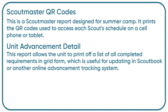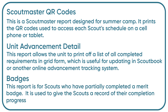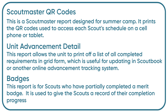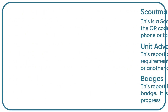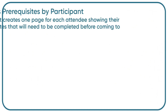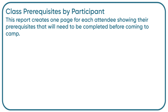Unit advancement detail: this report allows the unit to print off a list of all completed requirements in grid form, which is useful for updating in Scoutbook or another online advancement tracking system. Badges: this report is for scouts who have partially completed a merit badge — it is used to give the scouts a record of their completion progress.